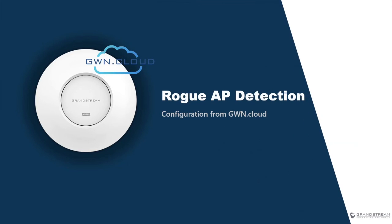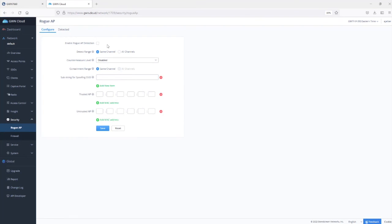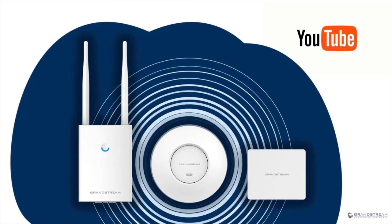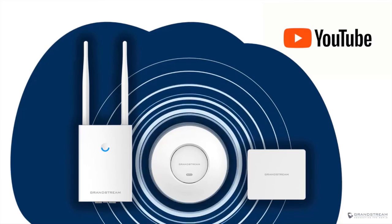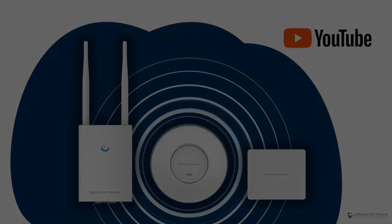If you are using GWN Cloud to manage your access points, the process is essentially the same. Log into your GWN.cloud account — the rogue AP feature is available under the Security tab, then Rogue AP. The configuration page on GWN Cloud is identical to the built-in controller: simply enable it and follow the same configuration parameters explained earlier. Thank you very much for watching. Leave a comment below if you have a request for future videos, and subscribe to our YouTube channel to stay up to date. Have a great day and I'll see you in the next video.